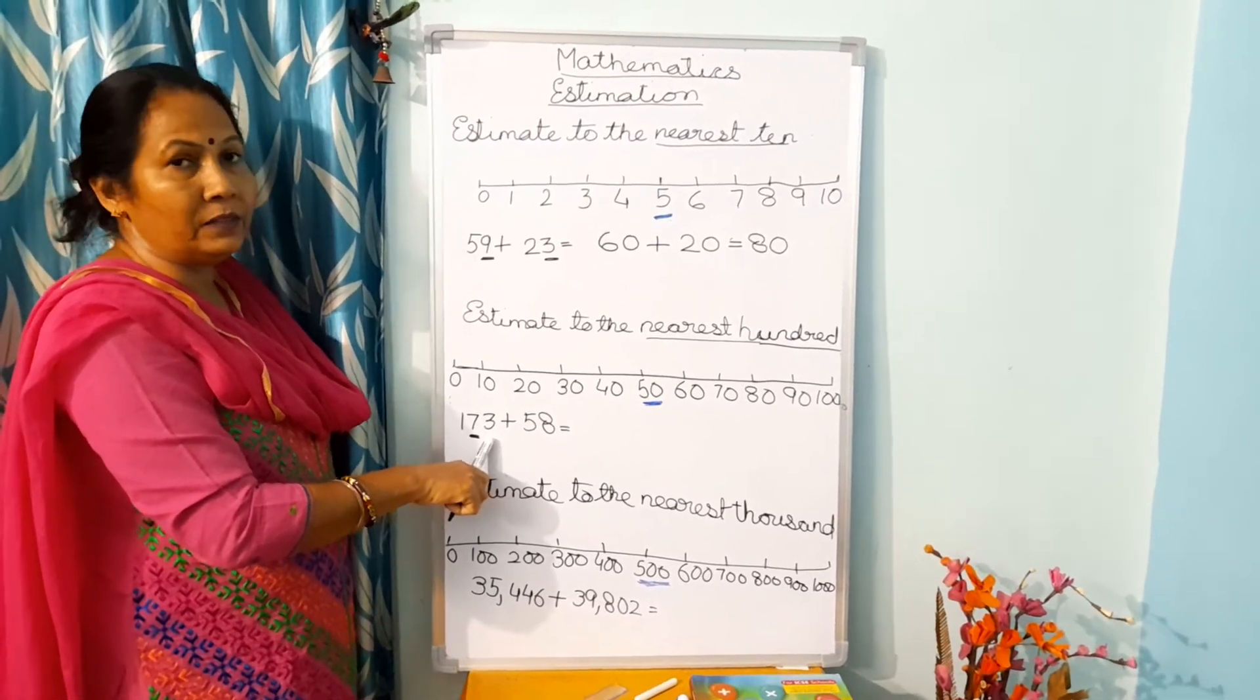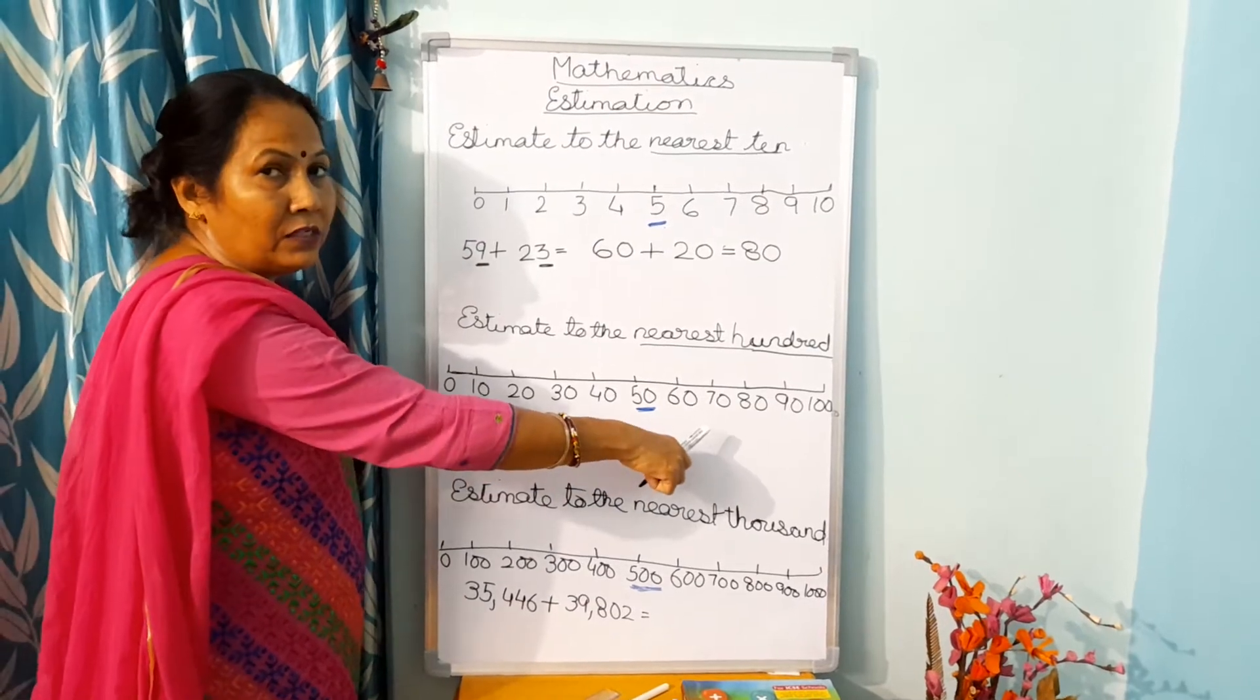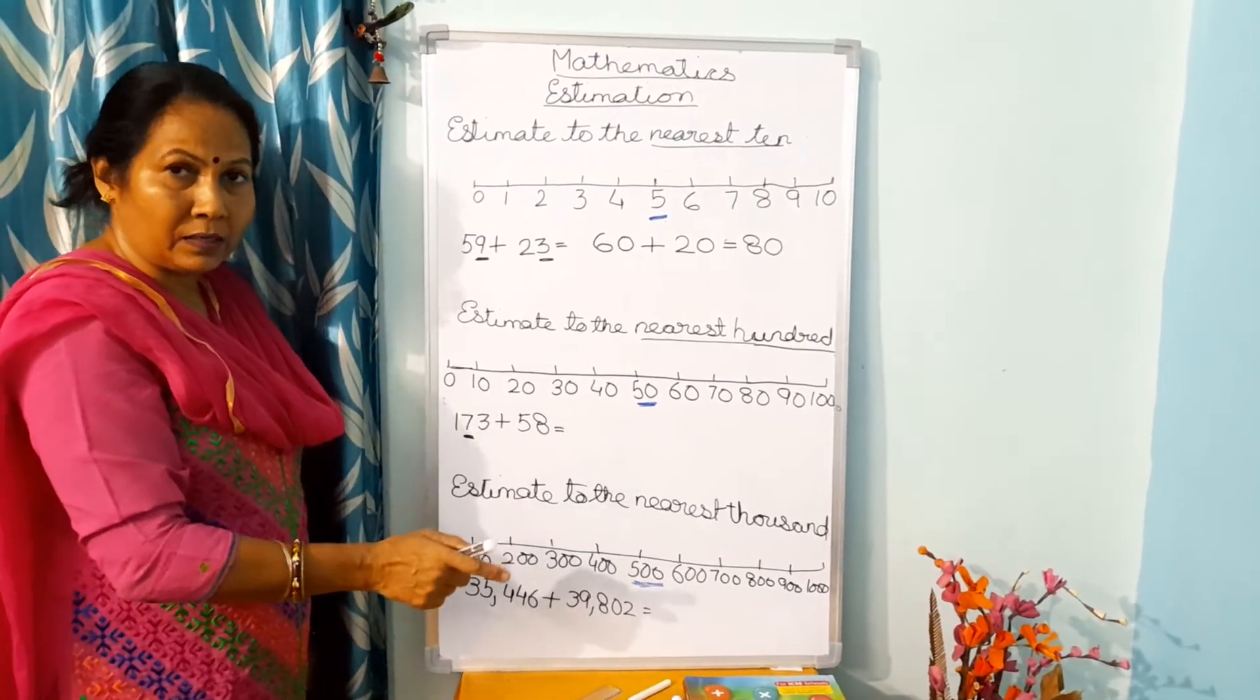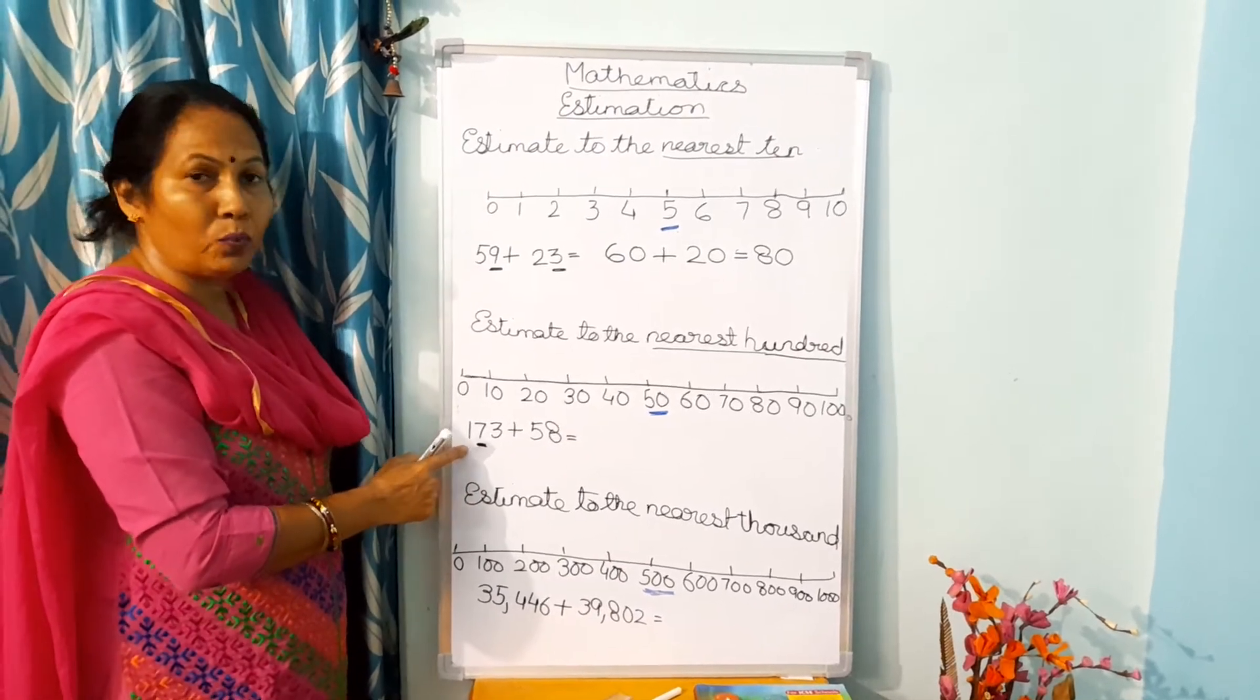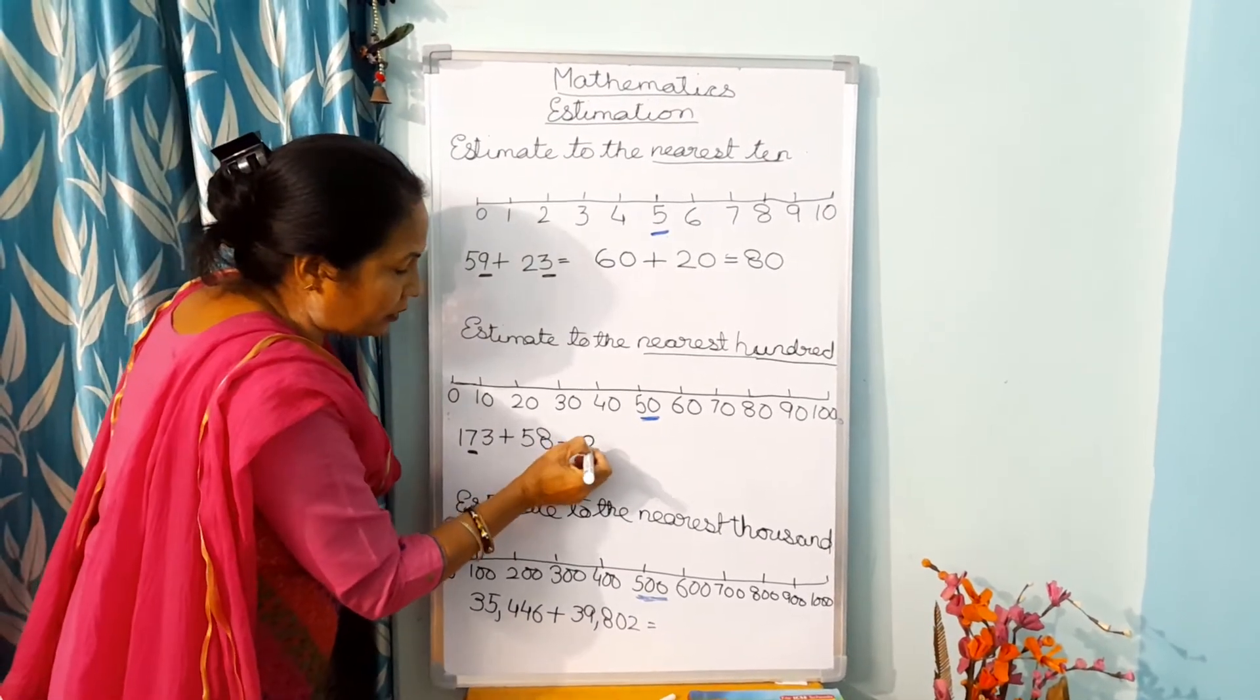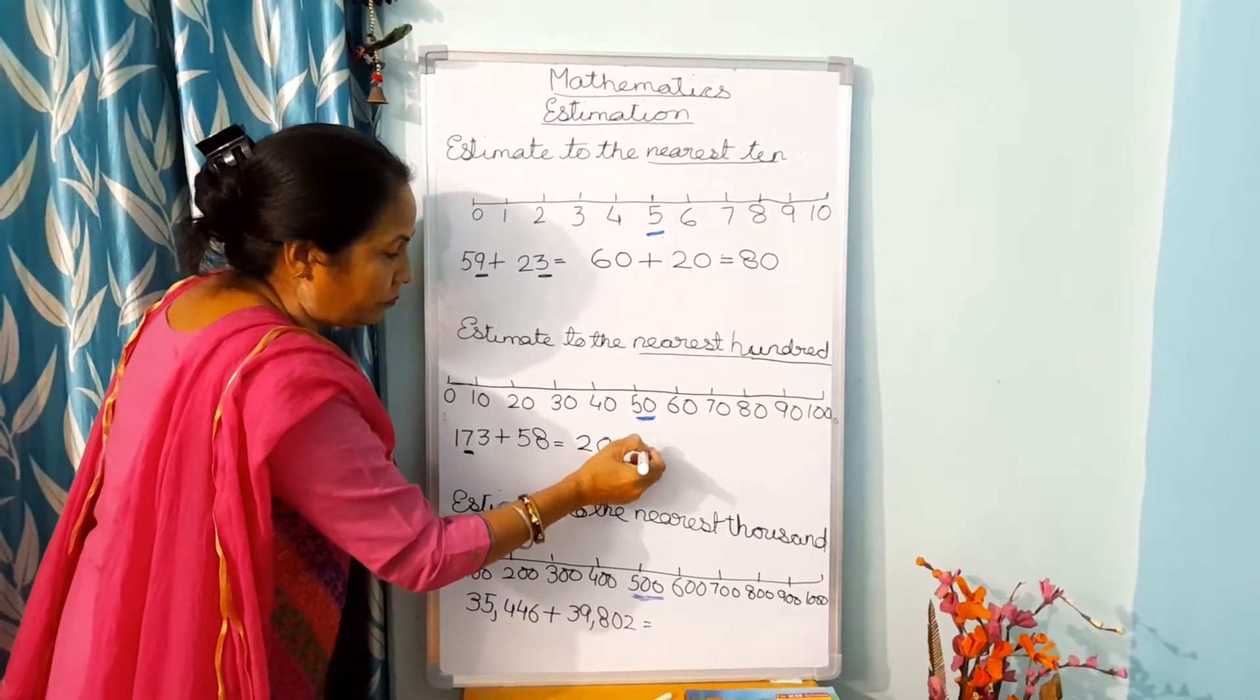Now in the 10's number, you will see 70. Now 70 is greater than 50, so this will become complete 100. So you will add 100 to 100, and your answer will be 200 plus...